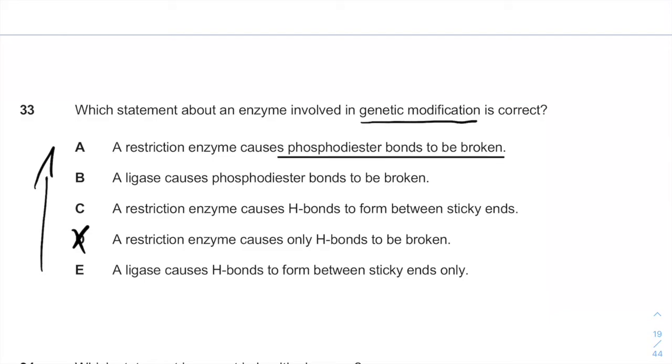So a restriction enzyme cause H-bonds to form? It doesn't form anything. It breaks. A ligase causes phosphodiester bonds to be broken? No, it doesn't break. It forms new chemical bonds. So after we eliminated all the different answers, we can see that the answer is phosphodiester bonds to be broken,